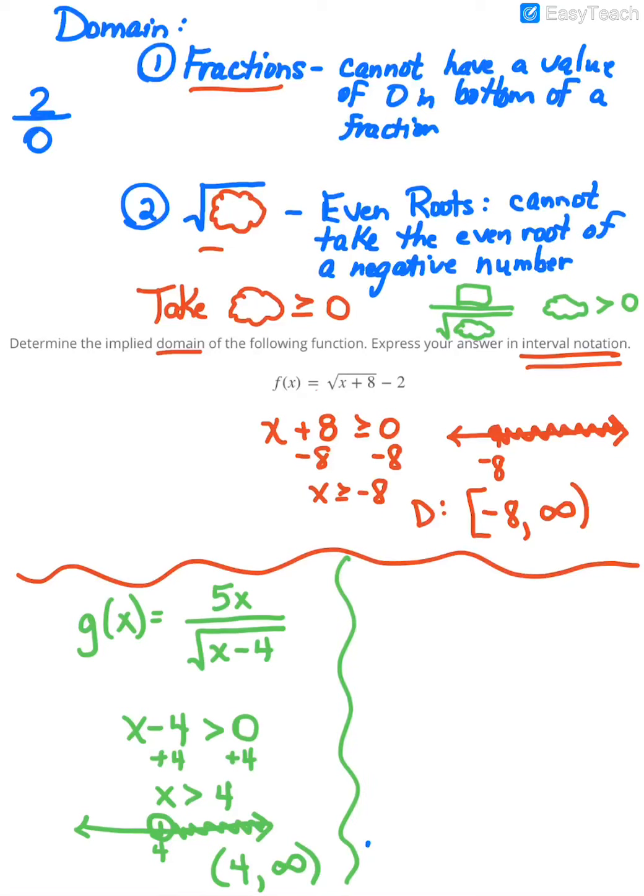Now, you could have a problem where you don't have a square root in the bottom, but you do have a fraction. So let's just take something like c of x, and let's say that we've got 2x plus 1, and then on bottom we just have something like 3x minus 4. Now we could care less about what's in the top of the fraction. That does not affect your domain. As we mentioned with fractions, it is the bottom that affects your domain.